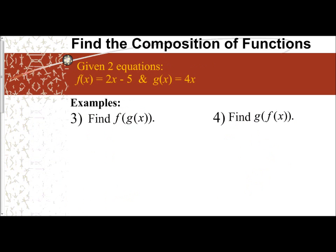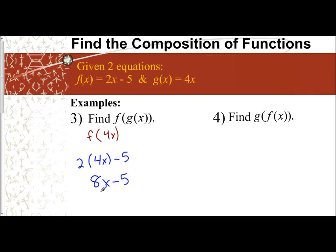Let's do a few more examples with two equations. Here, f(x) = 2x − 5 and g(x) = 4x. First, find f of g of x. Well, g(x) is 4x, so I'm finding f(4x). Wherever I see x in f, I replace it with 4x. So 2x − 5 becomes 2(4x) − 5. Distributing, 2 times 4x is 8x, giving 8x − 5, which cannot be simplified.